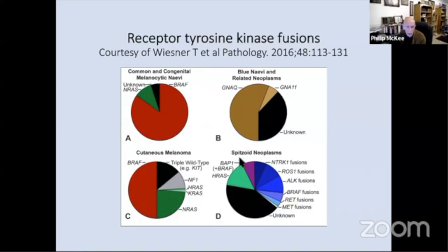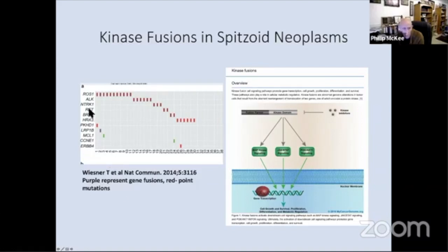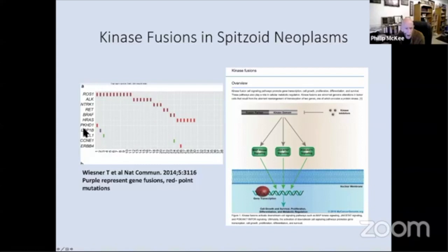I would make the point that spitzoid melanoma is associated with HRAS mutations, but it doesn't show BRAF or NRAS as you would see in regular cutaneous melanoma, nor does it show KIT mutations either. So spitzoid melanoma is a very distinct entity. This molecular data we're acquiring is absolutely fantastic — it really is transforming things. This illustration from Weisner's 2014 paper shows purple boxes representing gene fusions — there are a lot of them — and with HRAS we have point mutations. So we can identify the molecular basis for a lot of spitzoid neoplasms.